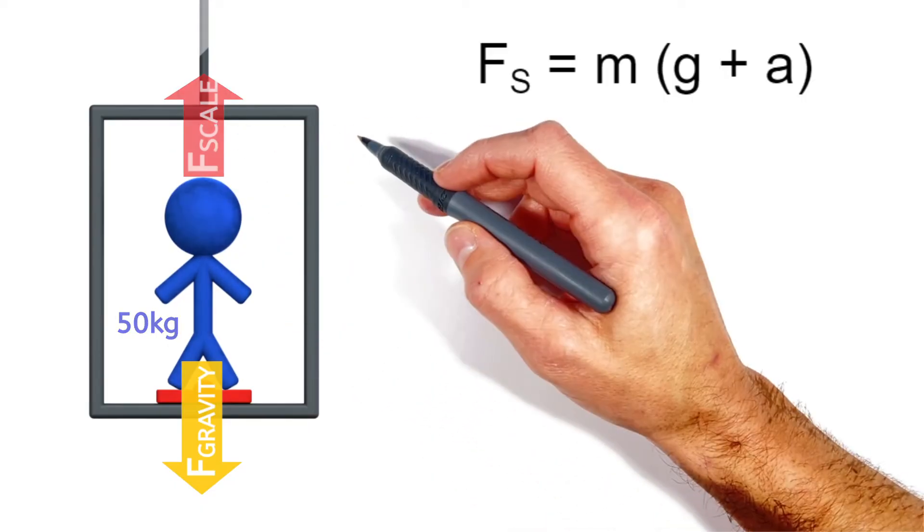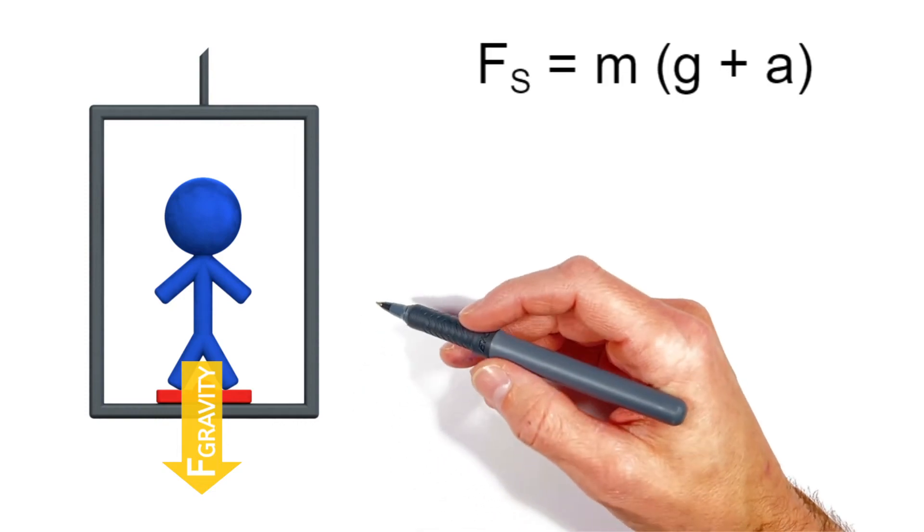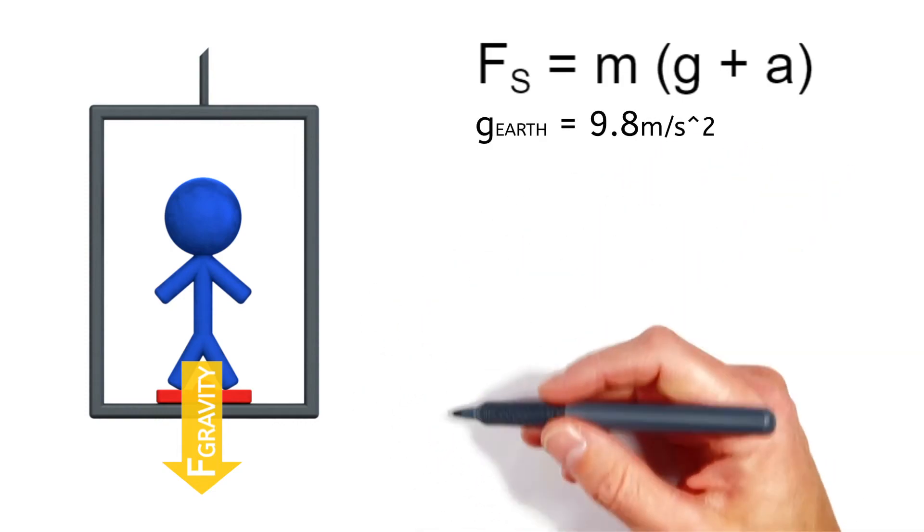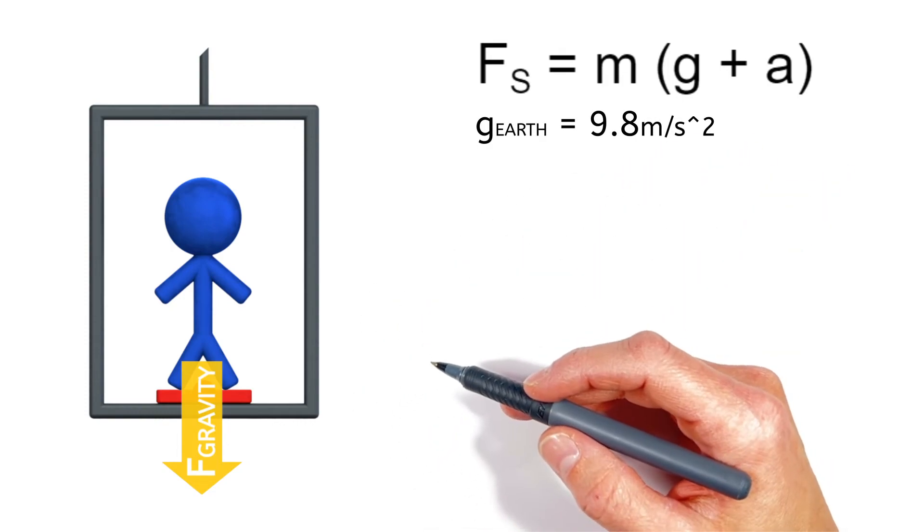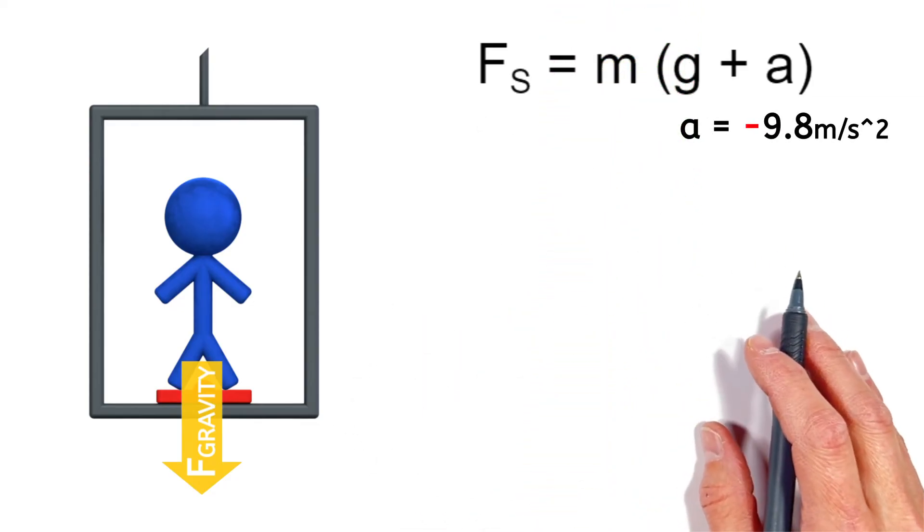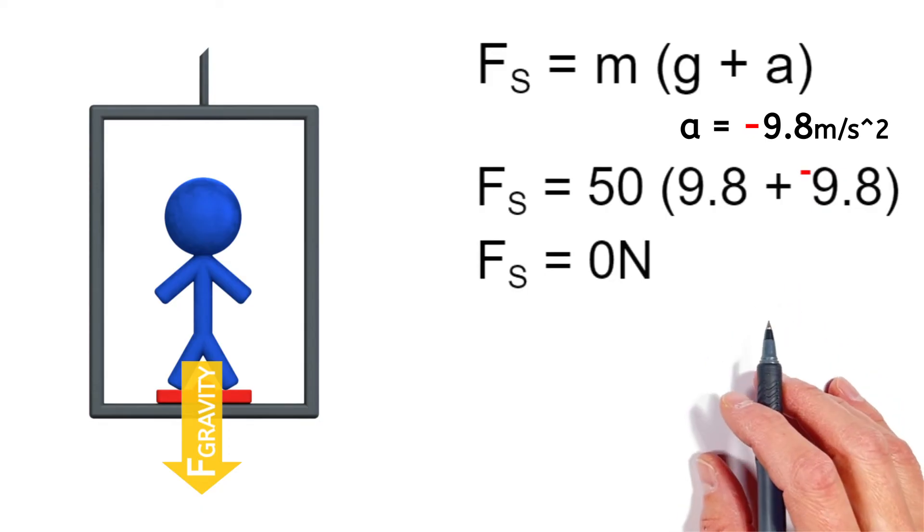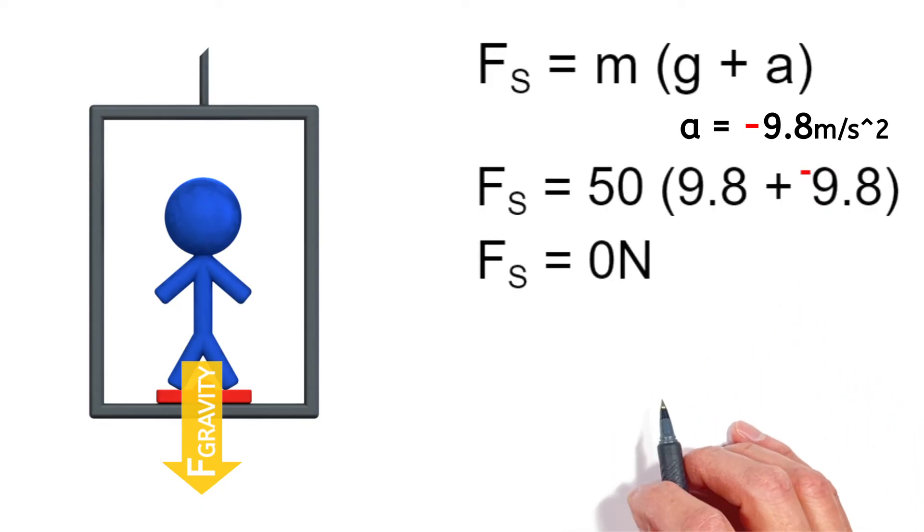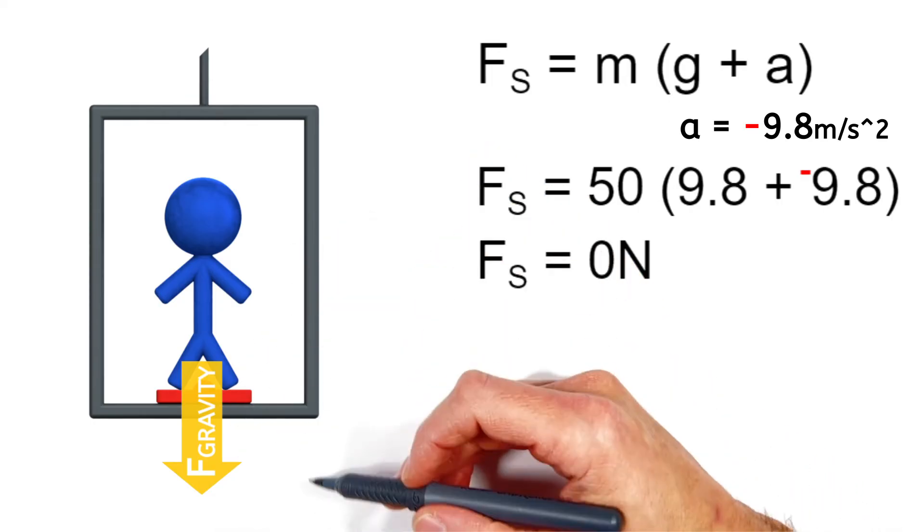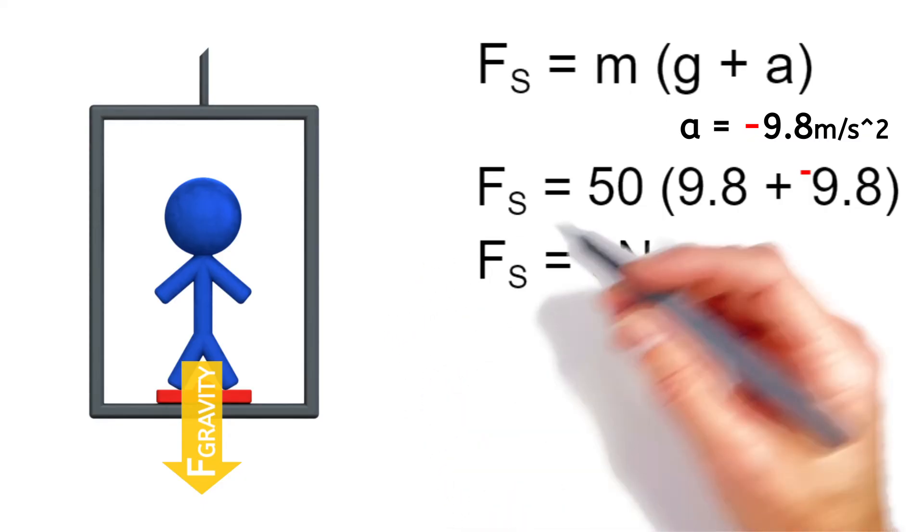Let's cut the cable of this elevator so that the elevator free falls downward. Any object in free fall on the surface of the earth accelerates downward at roughly 9.8 meters per second squared. So plugging negative 9.8 into our equation for a, we find the force by the scale on the person must equal zero. Meaning nothing is holding this person up. They're in free fall just like the elevator. But the important thing here is what this person feels.